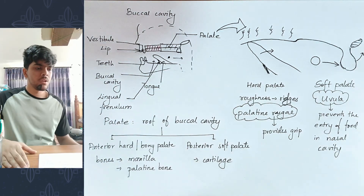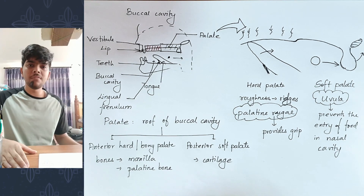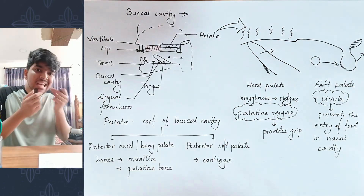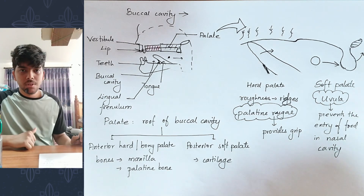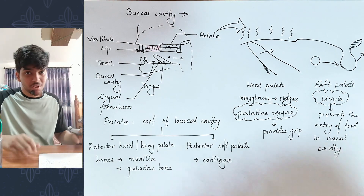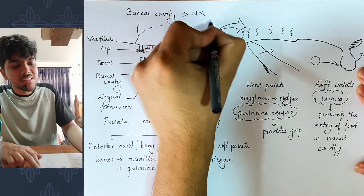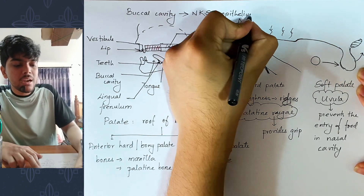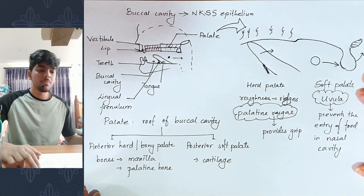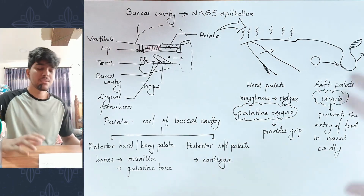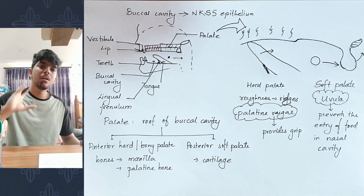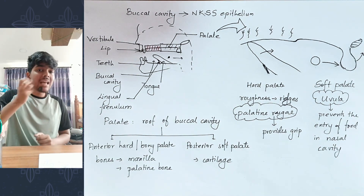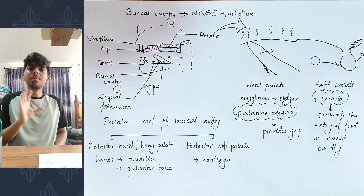The function of the uvula is to prevent the entry of food into the nasal cavity. Now about the lining of the buccal cavity — the buccal cavity is lined by non-keratinized stratified squamous epithelium (NKSSE).